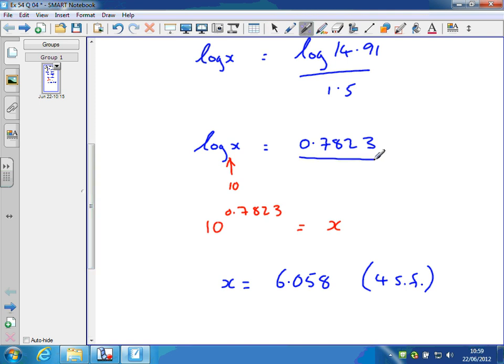And then once we've done that, remember what logarithms mean. So to get what x is, we need to know what 10 to the power of 0.7823 is, and that gives us x.